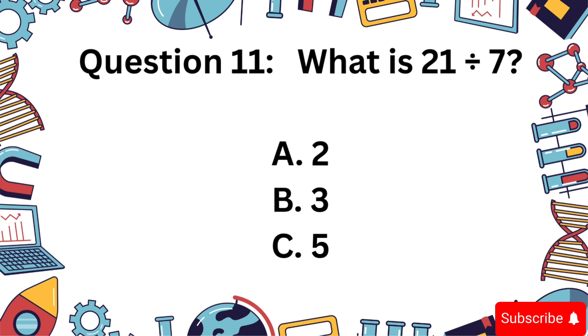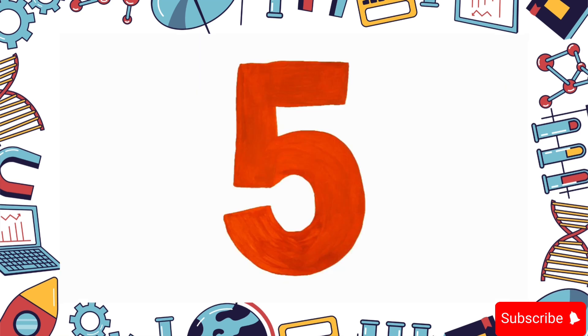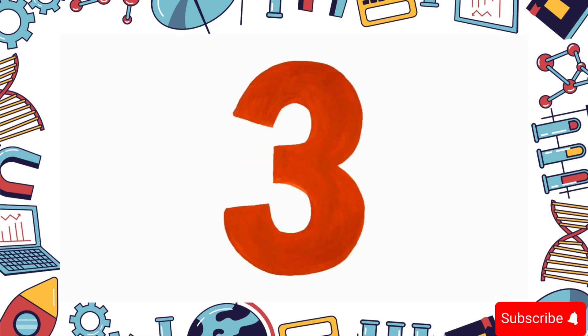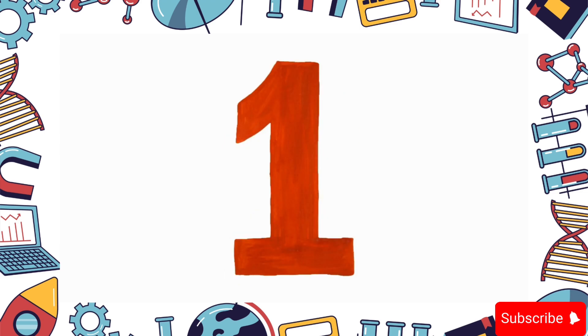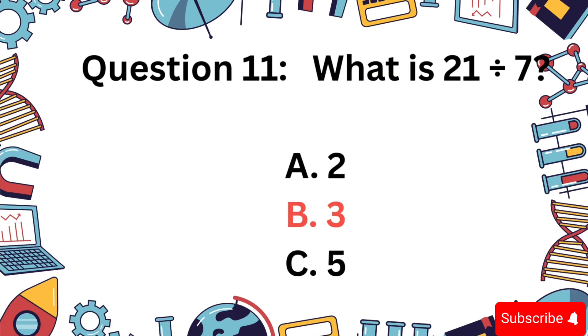21 divided by 7. A, 2, B, 3, or C, 5? Answer: B, 3.